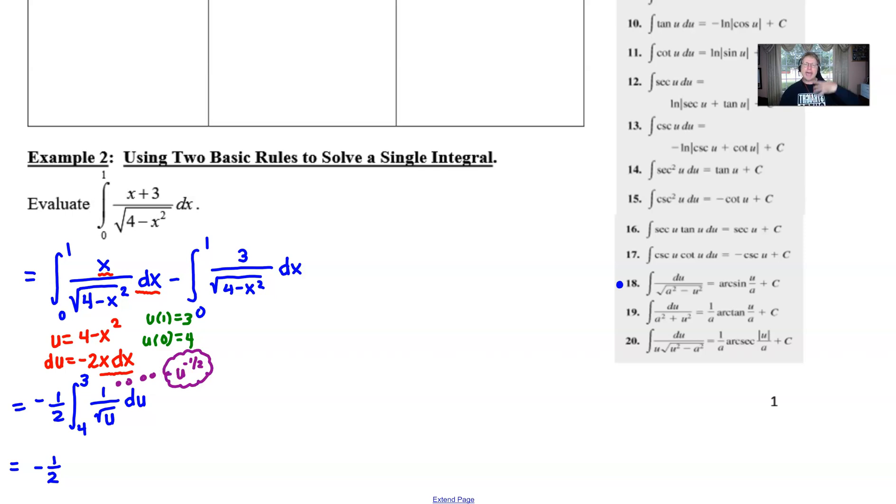We would then add 1 to the exponent. That would give us u to the positive half. We would then divide by that exponent, a half, which is the same as multiplying by 2. And then we can use our boundaries that we found a moment ago, 3 and 4.